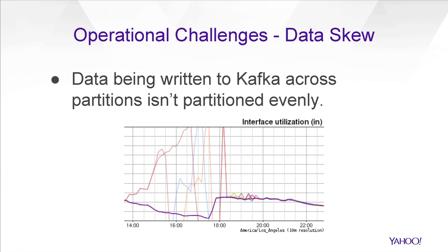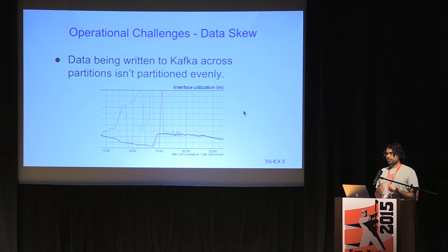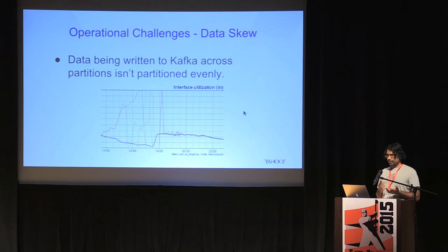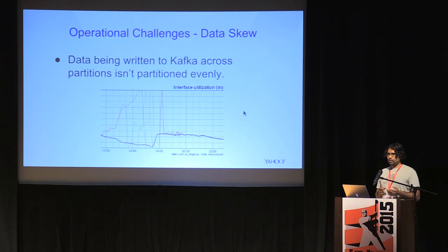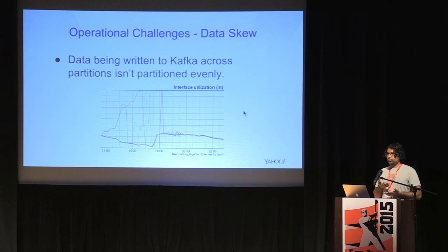Some of the operational challenges around Kafka are related to skew. One form is data skew — the data being written to the cluster, to the topics, may not be evenly distributed across all your partitions. This can happen if you're using partitioning by key or value, and this manifests in the network I/O. So network I/O on some of your hosts will be really high and others very low. There's no easy way to spot this without looking at the actual sizes of each partition. Another source of data skew could be that some messages are really small while others are really large, so there's no way to distribute the load evenly unless you look at partition sizes and do some batching on your own.